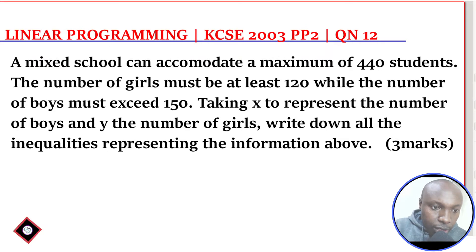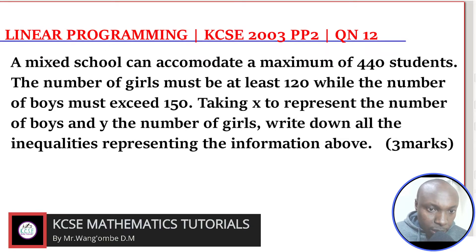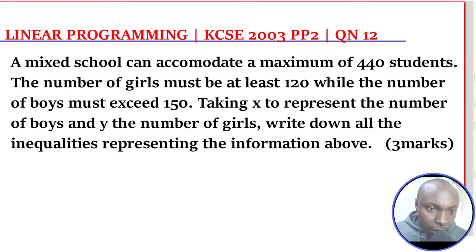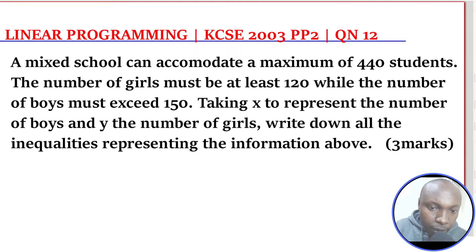The question reads: a mixed school can accommodate a maximum of 440 students. The number of girls must be at least 120, while the number of boys must exceed 150. Taking X to represent the number of boys and Y to represent the number of girls, write down all the inequalities representing the information above.